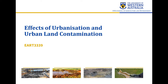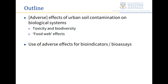In this session we're going to follow on from looking at the factors that control contaminants in soils to have a look at some of the effects of urbanization and urban land contamination on the biological parts of the system, including us. We'll look through a few case studies examining the effects of urban soil contamination on different things in the context of toxicity, biodiversity, and also transfer through food webs.